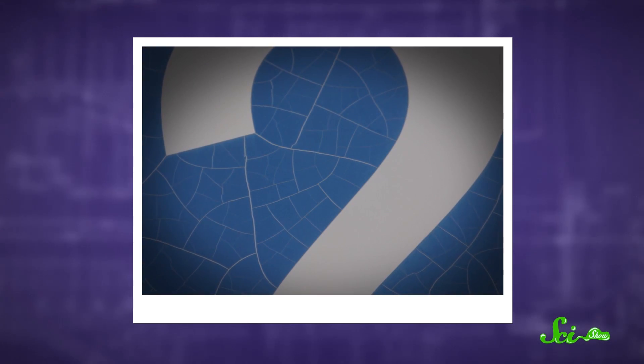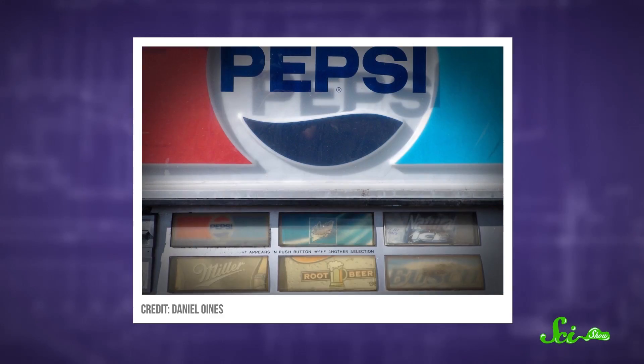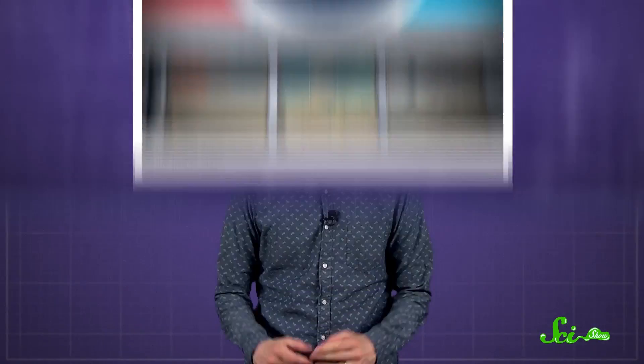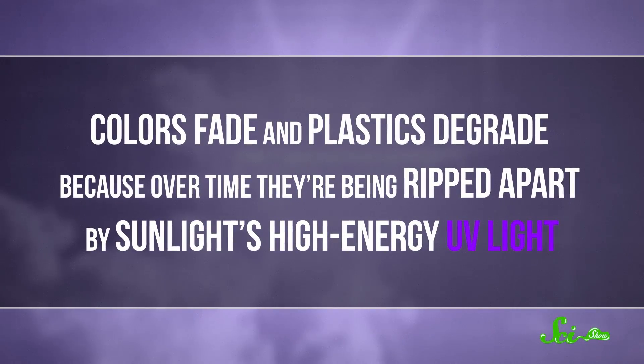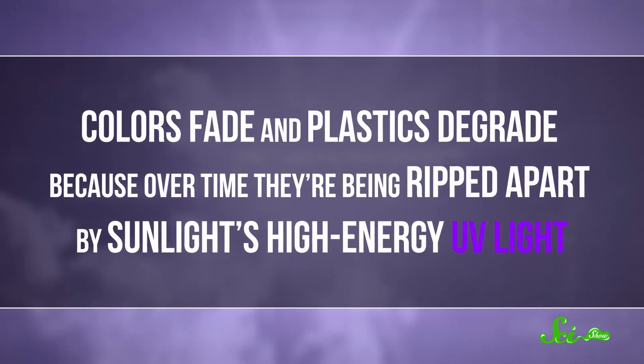Even stranger, sunlight will eventually cause some kinds of plastic to crack or develop dark streaks. It's almost like it's been sunburned. Well, that's not too far off, actually, in the sense that it's being damaged by ultraviolet light. Colors fade and plastics degrade because, over time, they're being ripped apart by sunlight's high-energy UV light.